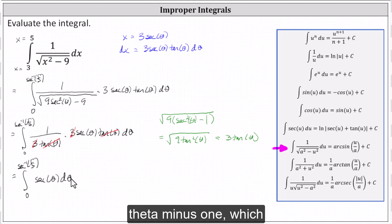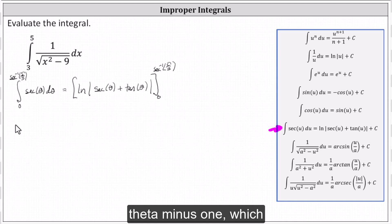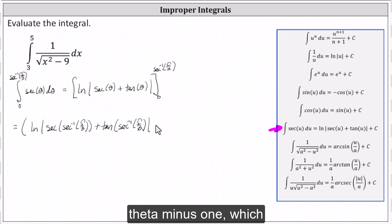Next, we determine the antiderivative. The antiderivative of secant theta is natural log of the absolute value of the sum of secant theta and tangent theta. We then determine F of inverse secant five-thirds minus F of zero, which gives us the natural log absolute value of secant of inverse secant five-thirds plus tangent of inverse secant five-thirds, minus natural log absolute value of secant zero plus tangent zero.